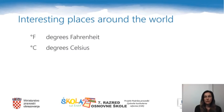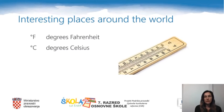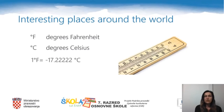When I was young, we had thermometers with degrees Celsius on the left side and degrees Fahrenheit on the right side. One degree Fahrenheit equals minus 17.2 degrees Celsius. People in America use Fahrenheit and people in Croatia use Celsius, of course.